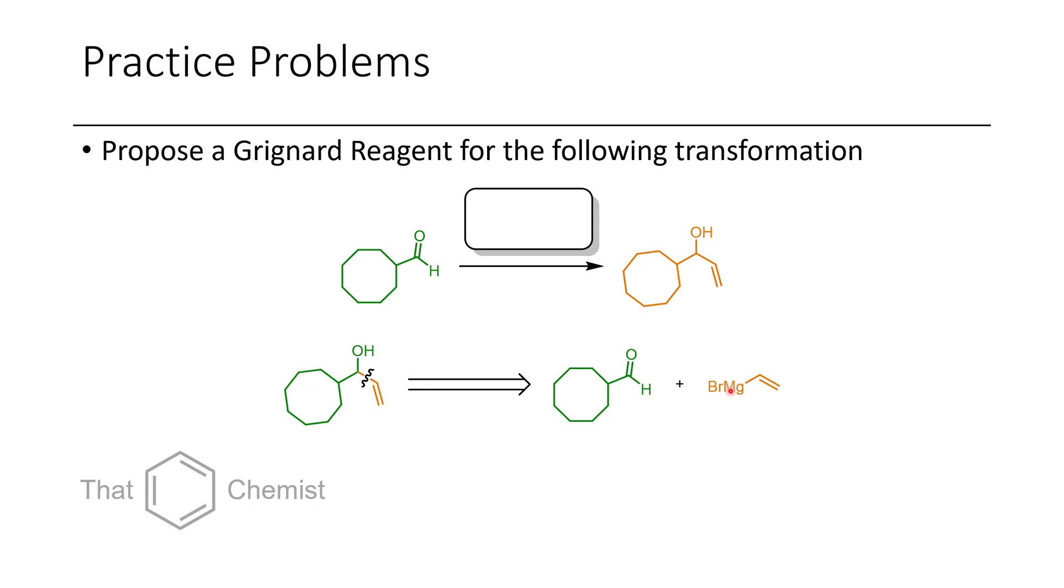You can see that we are using vinyl magnesium bromide. It's good to remember that you can get an allylic alcohol by adding a vinyl Grignard to an aldehyde. This is a useful synthetic disconnection to be familiar with.